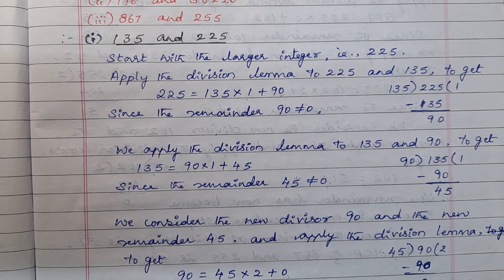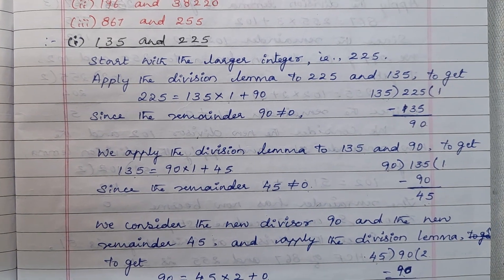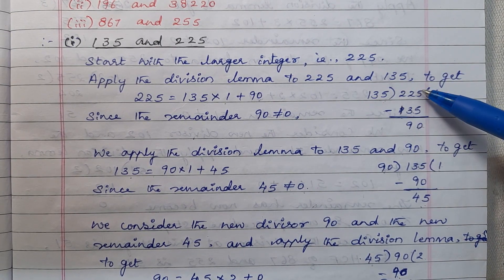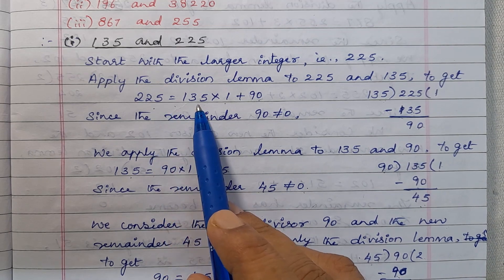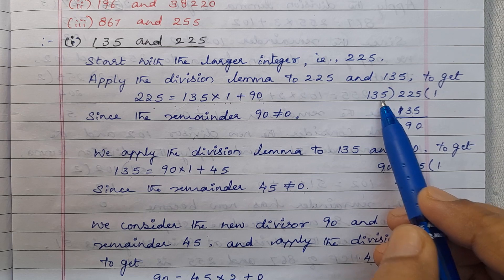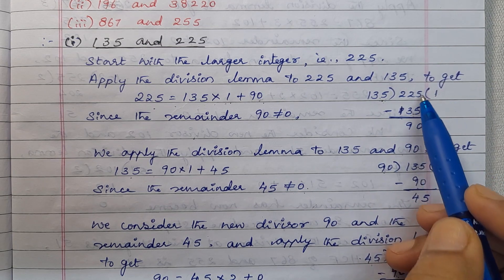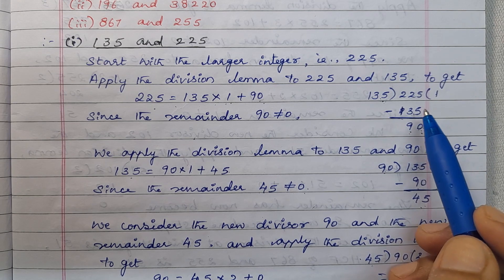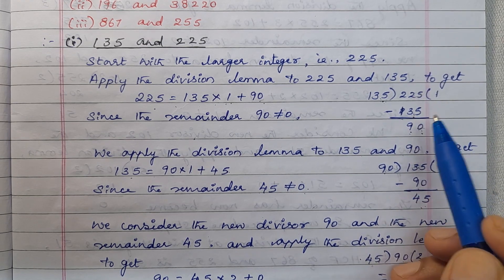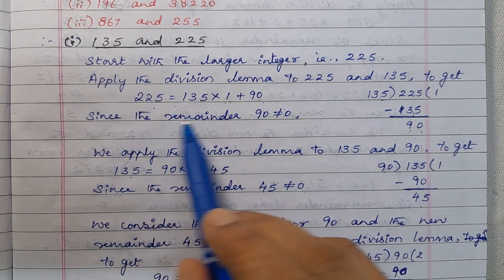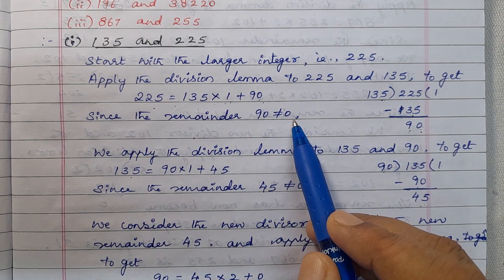Now see the solution - how to write it. Start with the larger integer, that is 225. Apply the division lemma to 225 and 135 to get 225 equals 135 into 1 plus 90. Subtract 135 from 225, we get remainder 90. Since the remainder 90 is not equal to 0.